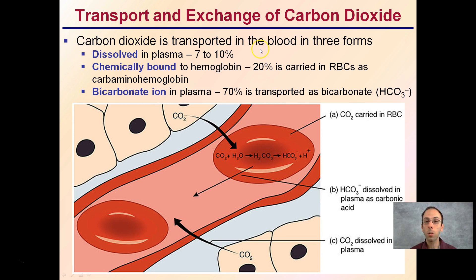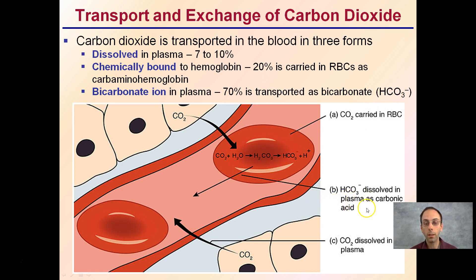Carbon dioxide is transported in blood in three main forms. First, dissolved in the plasma — this only accounts for about 7 to 10 percent. Second, it can be chemically bound to hemoglobin as carbaminohemoglobin, carried in red blood cells — this is about 20 percent. The vast majority, 70 percent, is transported as a bicarbonate ion (HCO3-). We also have some carbon dioxide dissolved within the plasma as carbonic acid — and as the name implies, that creates an acidic environment.